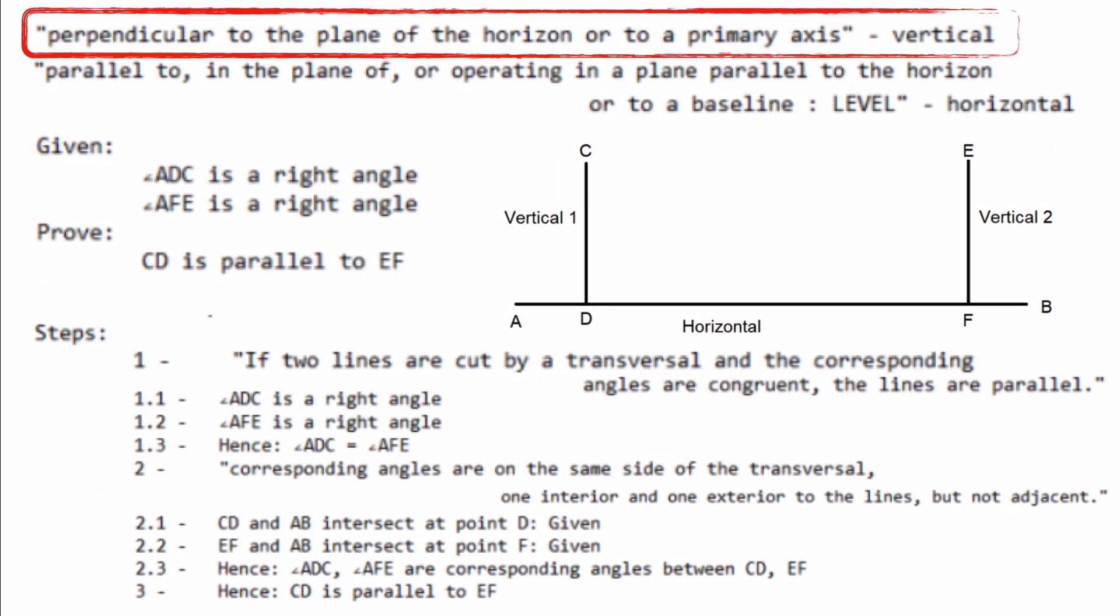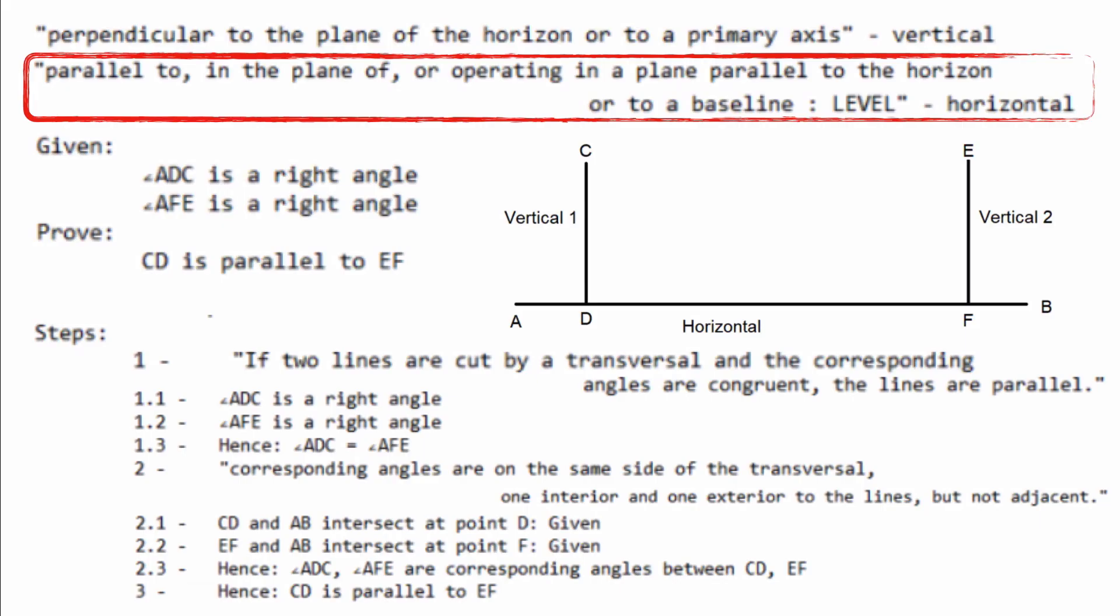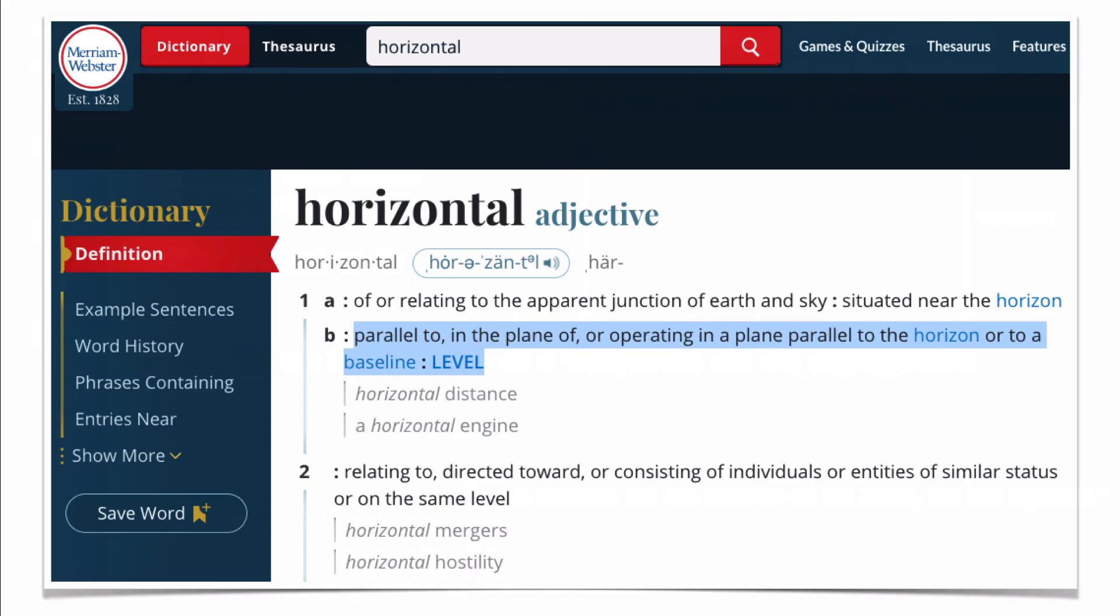Saragaki starts with a few definitions. Perpendicular to the plane of the horizon, or to a primary axis, vertical. This is copied straight out of Merriam-Webster's online dictionary. Parallel to, in the plane of, or operating in a plane parallel to the horizon, or to a baseline, level, horizontal. Also copied verbatim from Merriam-Webster.